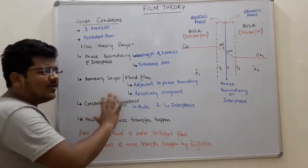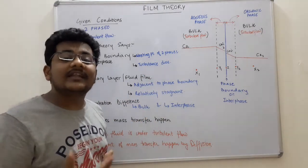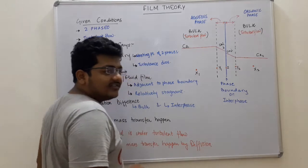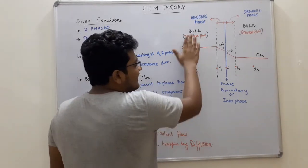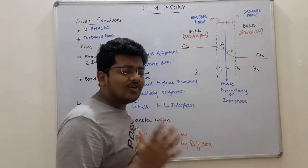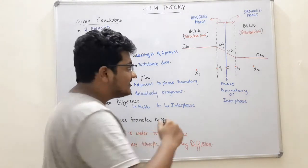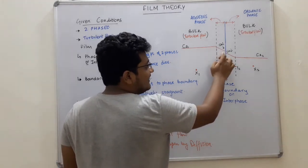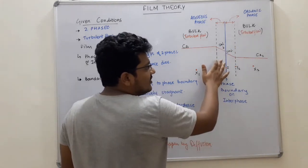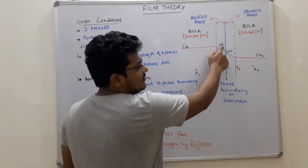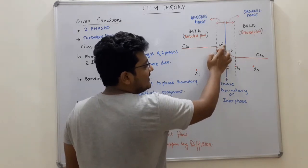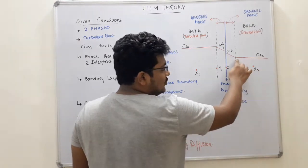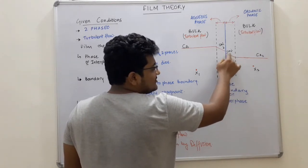Now let us understand how the concentration varies throughout the system for component A, which we want to transfer. The concentration of component A in the bulk of the aqueous phase is constant because the bulk is in turbulent motion and well mixed. But as it reaches the relatively stagnant region it decreases, and at the phase boundary the concentration of component A is Ca1i. Similarly, the concentration of component A in the bulk on the other side is constant at Ca2, and at the interface it is Ca2i — it changes because that region is relatively stagnant.